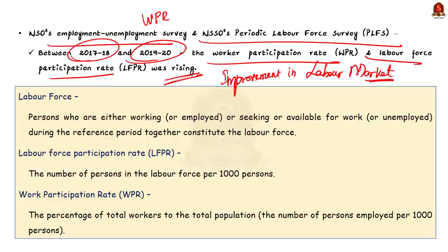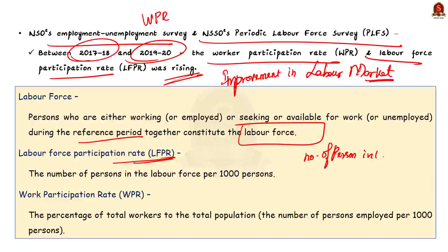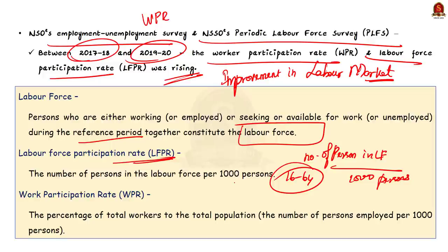Labour Force Participation Rate is defined as the number of persons in the labour force per 1000 persons — that is, the section of working population in the age group of 16 to 64 currently employed or seeking employment. Note that people still undergoing studies, housewives, and persons above age 64 are not reckoned in the labour force. Worker Population Ratio is defined as the percentage of total workers to total population, or the number of persons employed per 1000 persons. The first term is inclusive — it includes the entire working population in 16–64 age group employed or seeking employment — whereas the second term is exclusive, only including persons employed per 1000 persons.